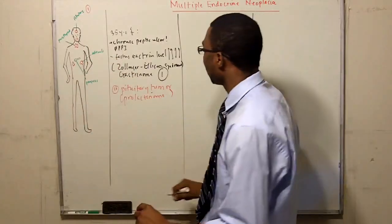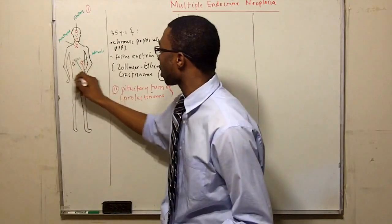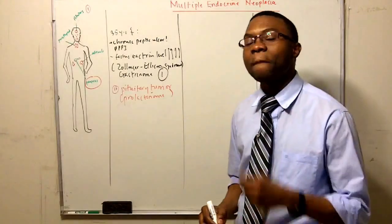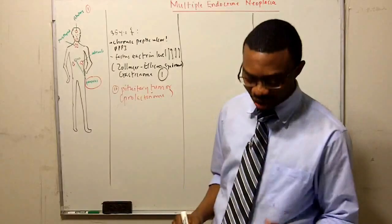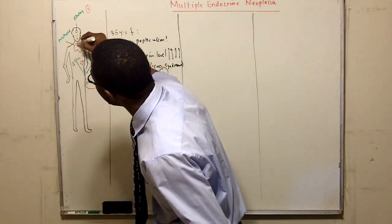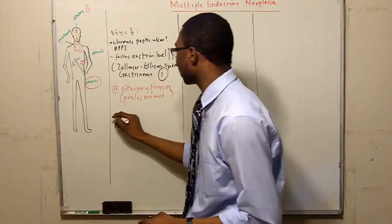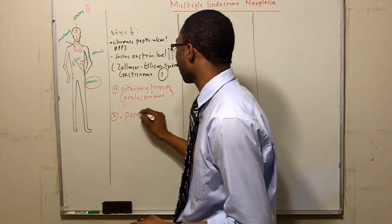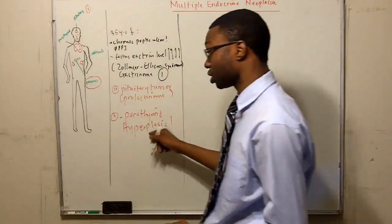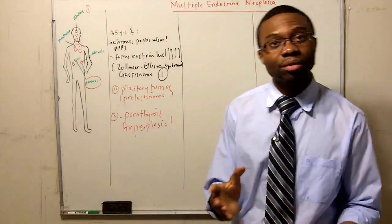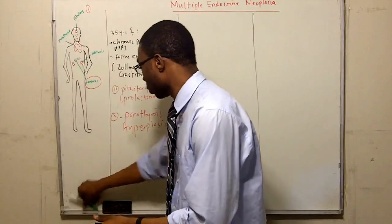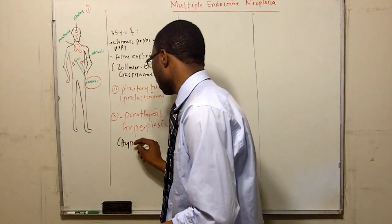She had a pituitary tumor, that was one right there. And she had a gastrinoma coming from my pancreas, a pancreatic tumor. So guess what? The only thing left is going to be a parathyroid. She's going to possibly even have another parathyroid hyperplasia right there. This is not a cancer, it's just hyperplastic. Which means they might be having hyperparathyroidism, right?